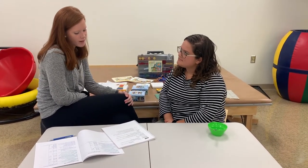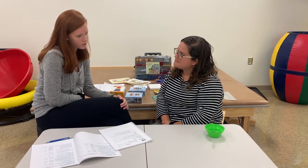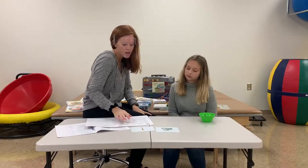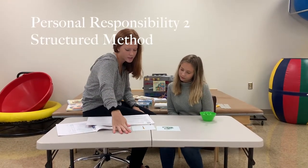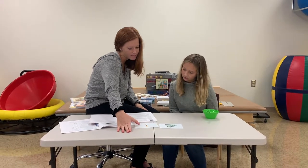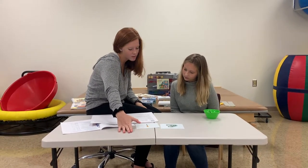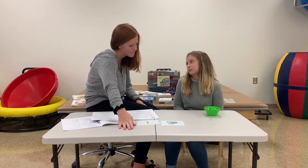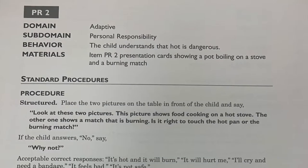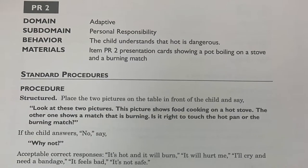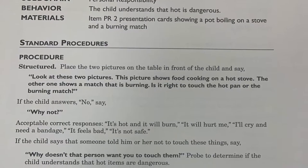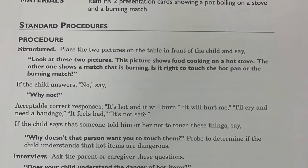How much supervision does the child require as she moves around the house? She's pretty independent. Look at these two pictures. This picture shows food cooking on a hot stove, the other one shows a match that is burning. Is it right to touch the hot pan or the burning match? No. Why not? It'll hurt me. If the child says that someone told him or her not to touch these things, say: why doesn't that person want you to touch them? Probe to determine if the child understands that hot items are dangerous.